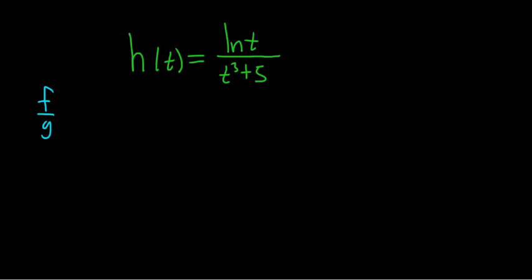So if you have f over g, and you take the derivative, it's the derivative of the top times the bottom minus the top times the derivative of the bottom, all over the bottom one squared.